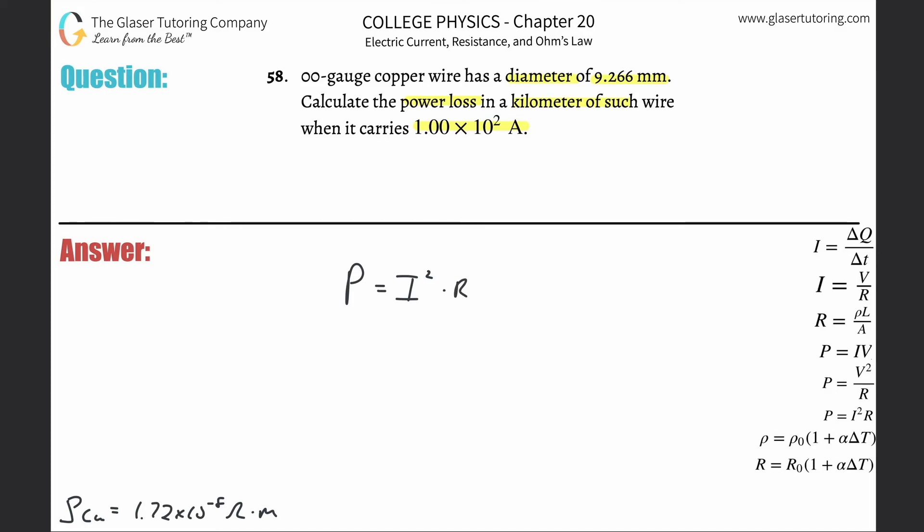They gave us a current that's flowing through this particular wire. So I know that this is going to be power is equal to, and 1 times 10 to the 2 is 100, so there's essentially 100 squared multiplied by R. In other words, this is going to be equal to power is equal to 10,000 multiplied now by the resistance.